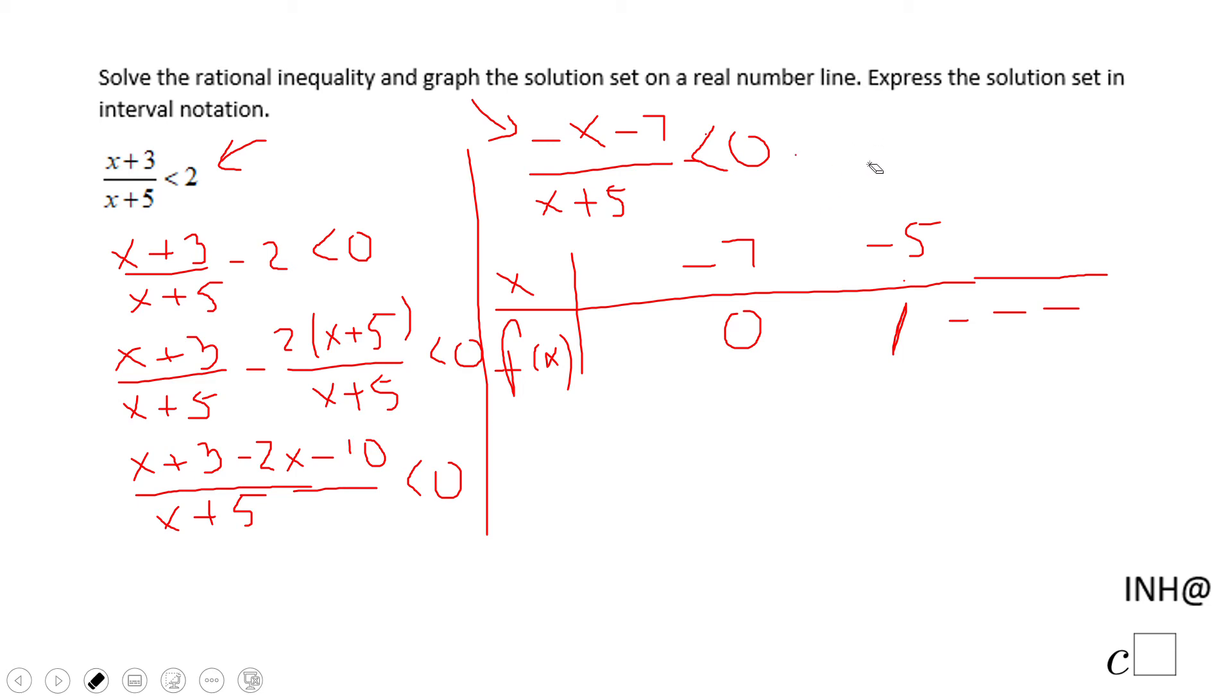If we're going to use a number between negative five and negative seven, like negative six, we're going to get a negative value for the numerator and a negative value for the denominator, so we have a plus here.